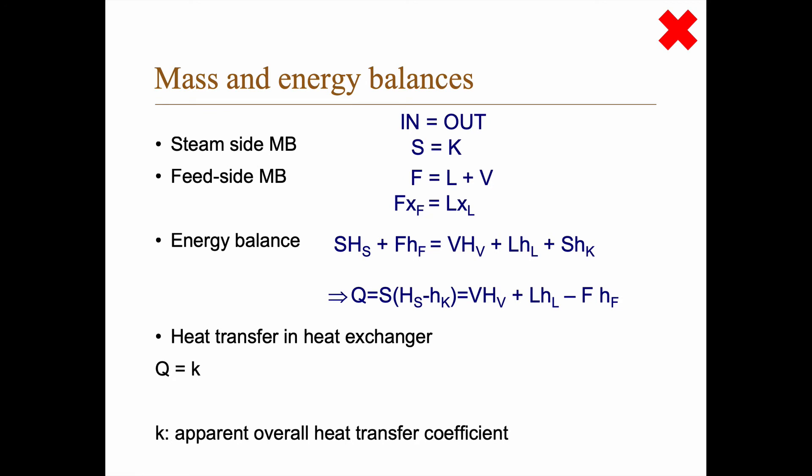For the heat transfer in the heat exchanger, we will introduce an apparent overall heat transfer coefficient. And what we have then is that the heat being transferred is k times the area of the heat exchanger times the temperature difference T_S minus T. Now we said earlier that this temperature difference T_S minus T is not exactly what happens, but it's fairly close.